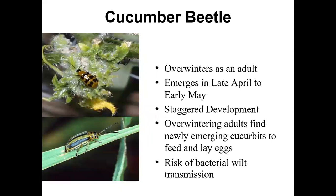There are two different types of cucumber beetle that we see in Ontario. The striped one is more common and we see it earlier in the season, whereas the spotted cucumber beetle, also known as the southern corn rootworm, more commonly overwinters south of the border and then moves up with the wind patterns. We tend to see it later in the season, though it can overwinter here. I just don't see it as much as the striped cucumber beetle.